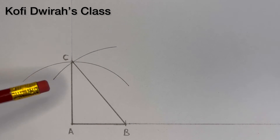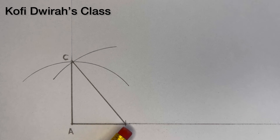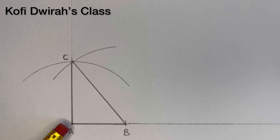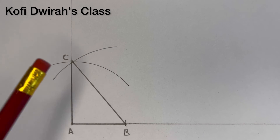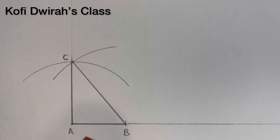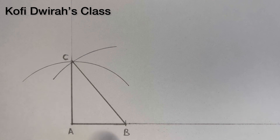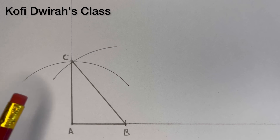This is how to construct a right-angle triangle using the 3-4-5 method. You first draw line AB, 3 centimeters which is 30 millimeters, then you measure 4 centimeters which is 40 millimeters with your compass and draw an arc. Then at point B measure 50 millimeters, which is 5 centimeters, then you draw another arc to get point C.